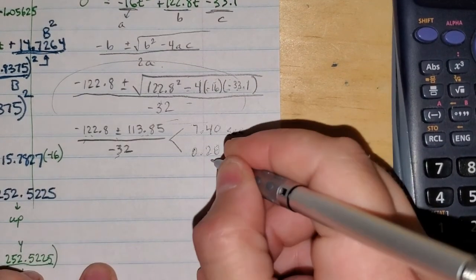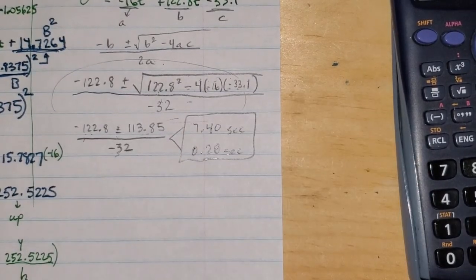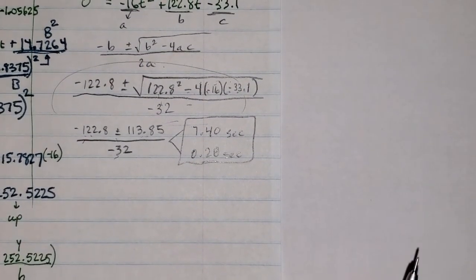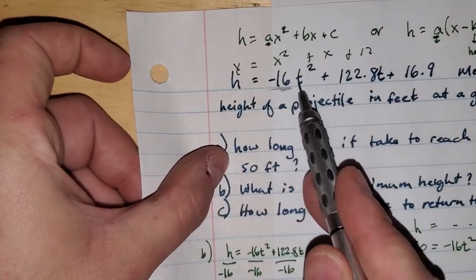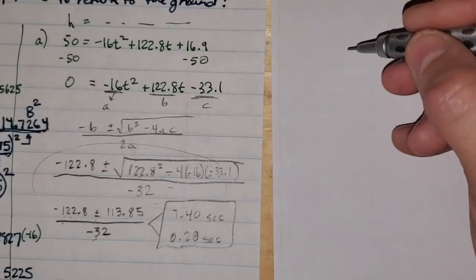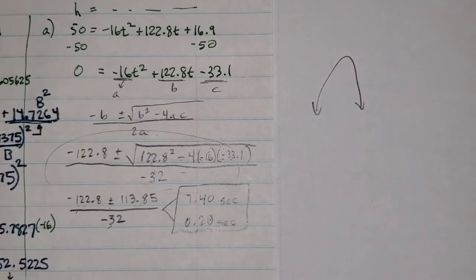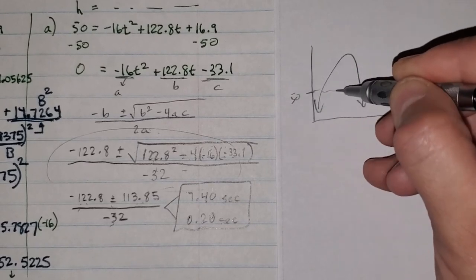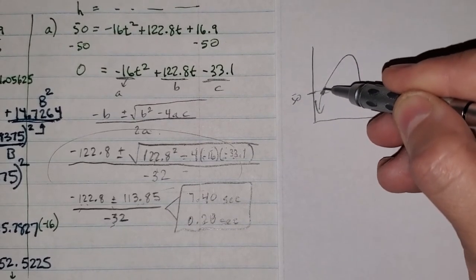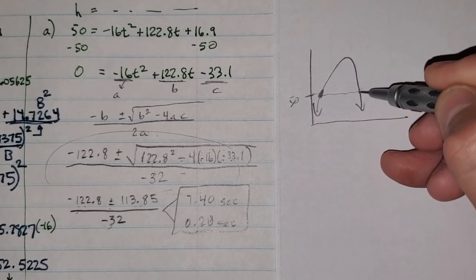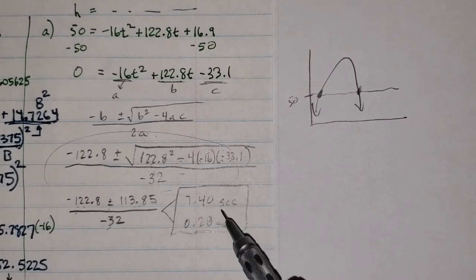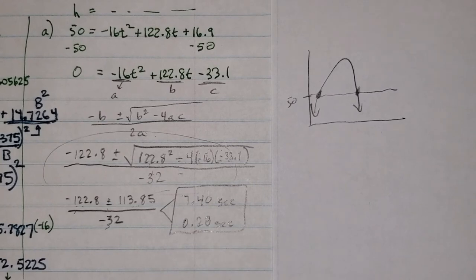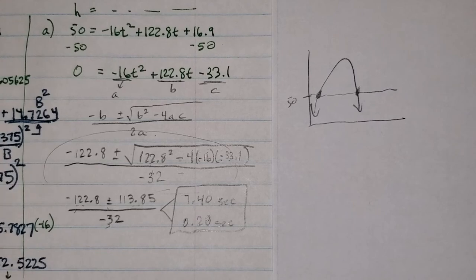Both 7.40 and 0.28 are in seconds, and that is the answer to part A. To understand why there are two answers: with a negative leading term, the graph is a downward parabola. Drawing a horizontal line at 50 feet, the projectile hits that height on the way up at 0.28 seconds, keeps going, comes back down, and hits 50 feet again at 7.40 seconds. That's why we get two answers — one going up, one coming down.